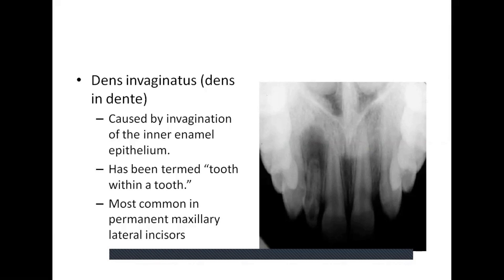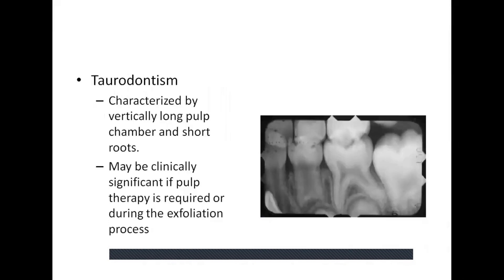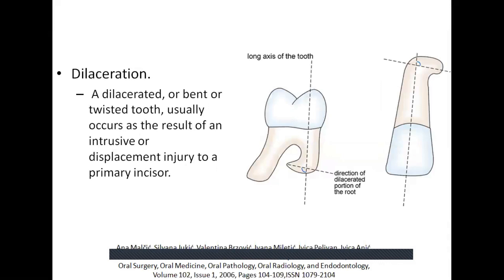Taurodontism is characterized by a vertically long pulp chamber and short roots. It may be clinically significant if pulp therapy is required or during the exfoliation process. Dilaceration is a bent or twisted tooth that usually occurs as a result of intrusive or displacement injury to primary teeth. The succeeding permanent anterior teeth develop close to the primary predecessor, and injuries to primary teeth may displace or bend the developing permanent teeth. Dilaceration is also a consistent finding in congenital ichthyosis.